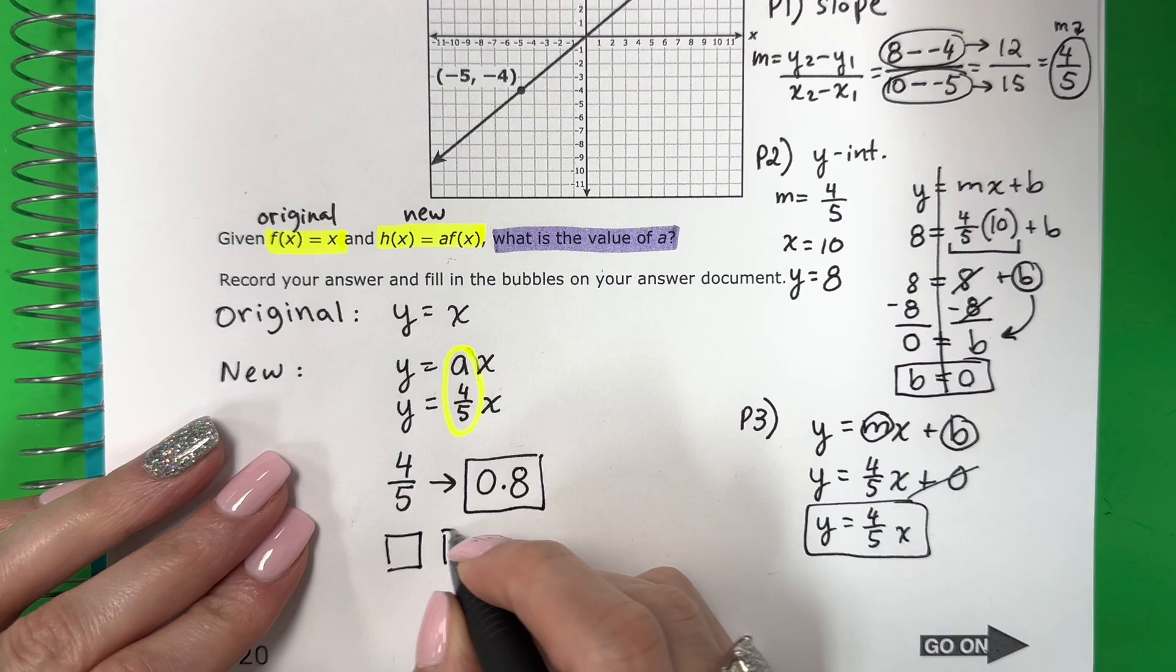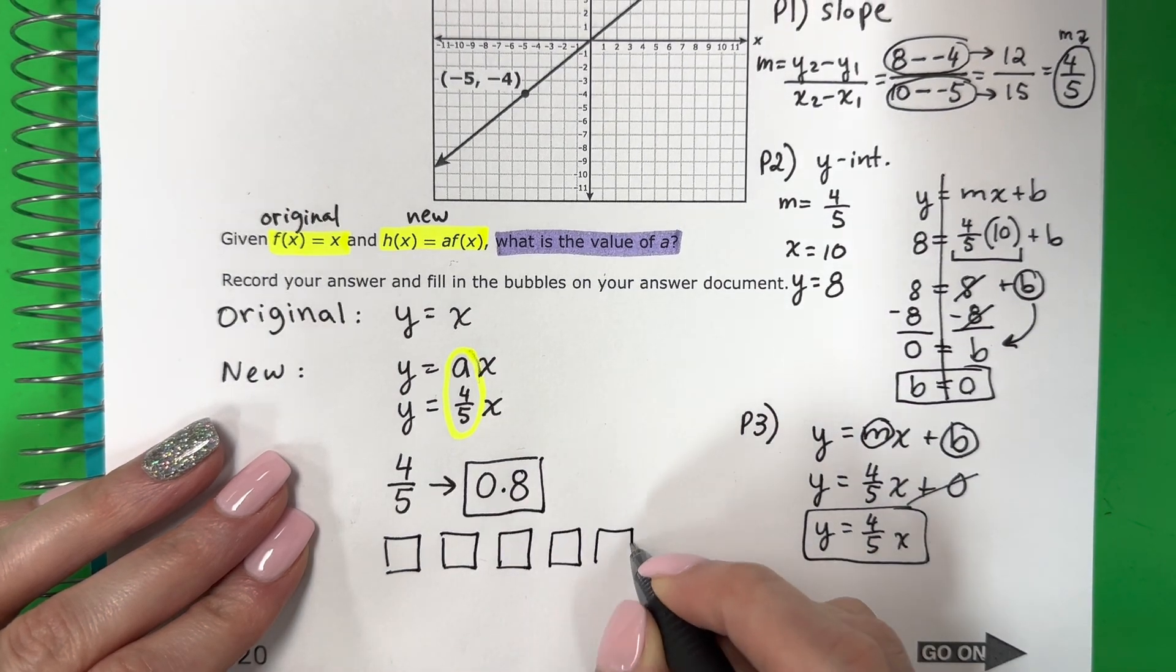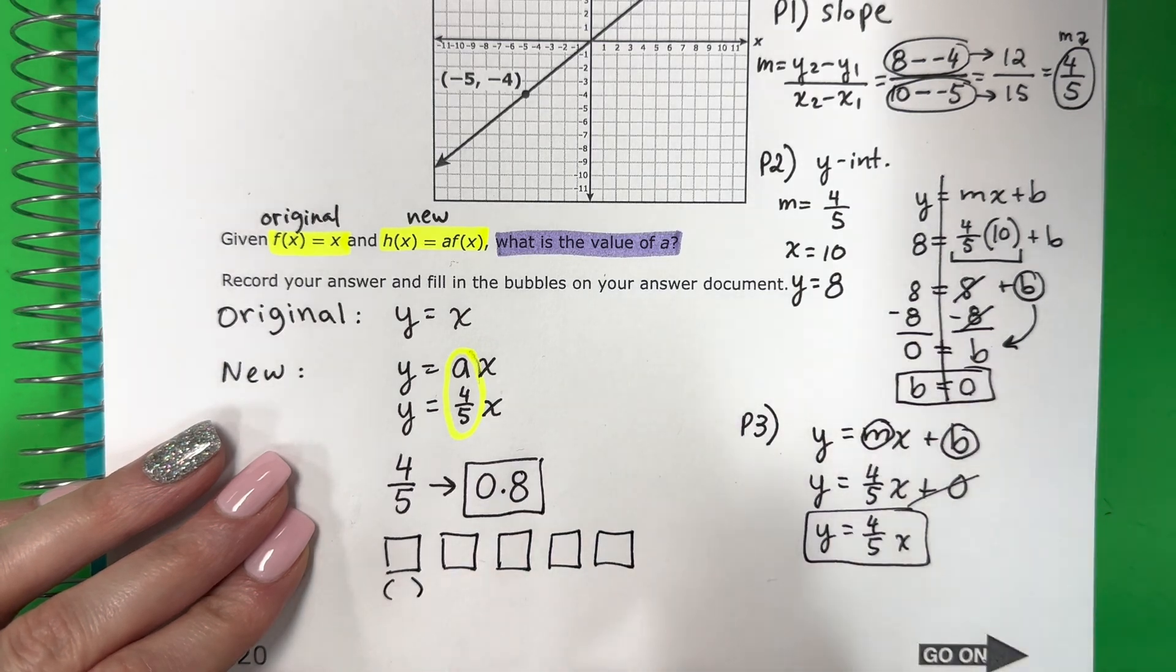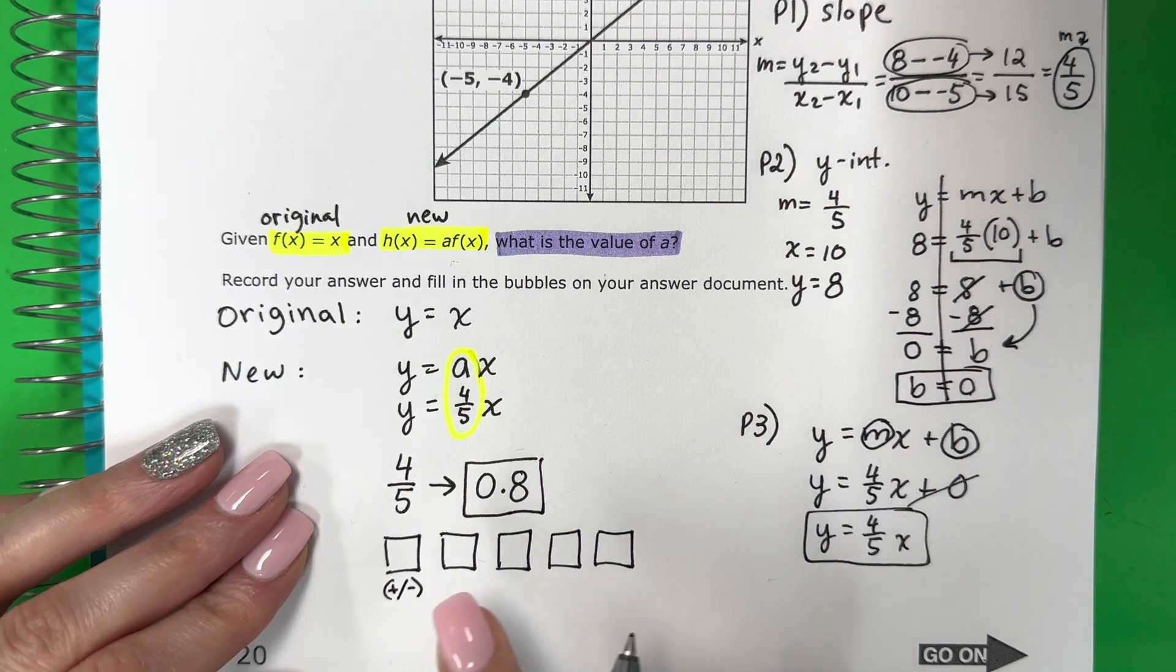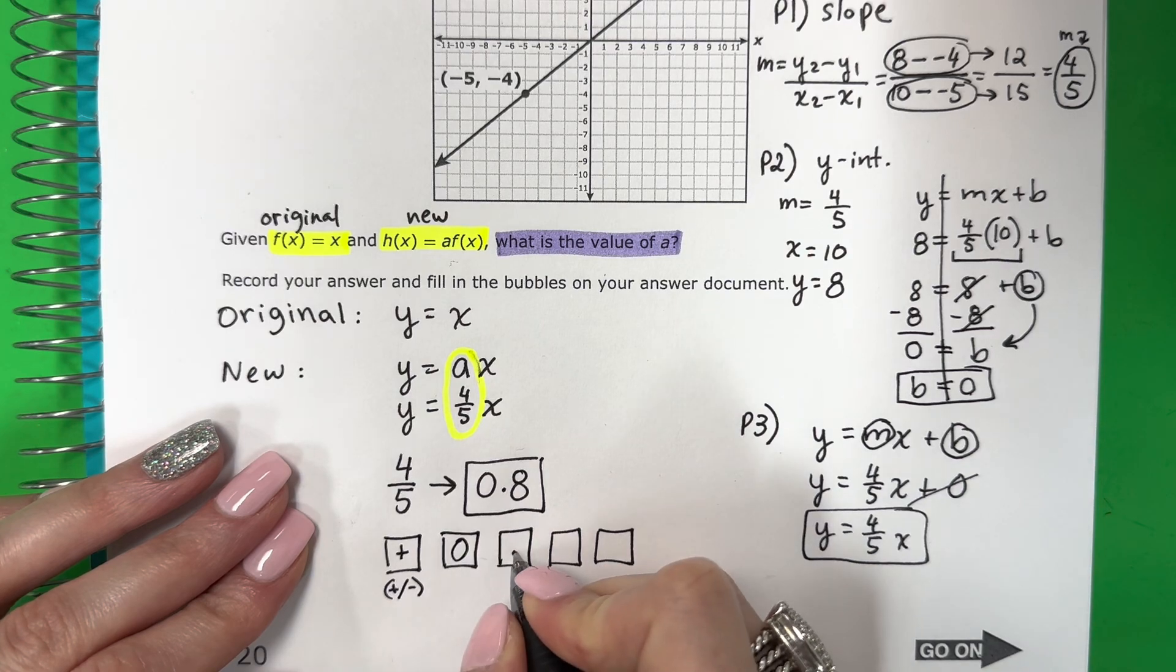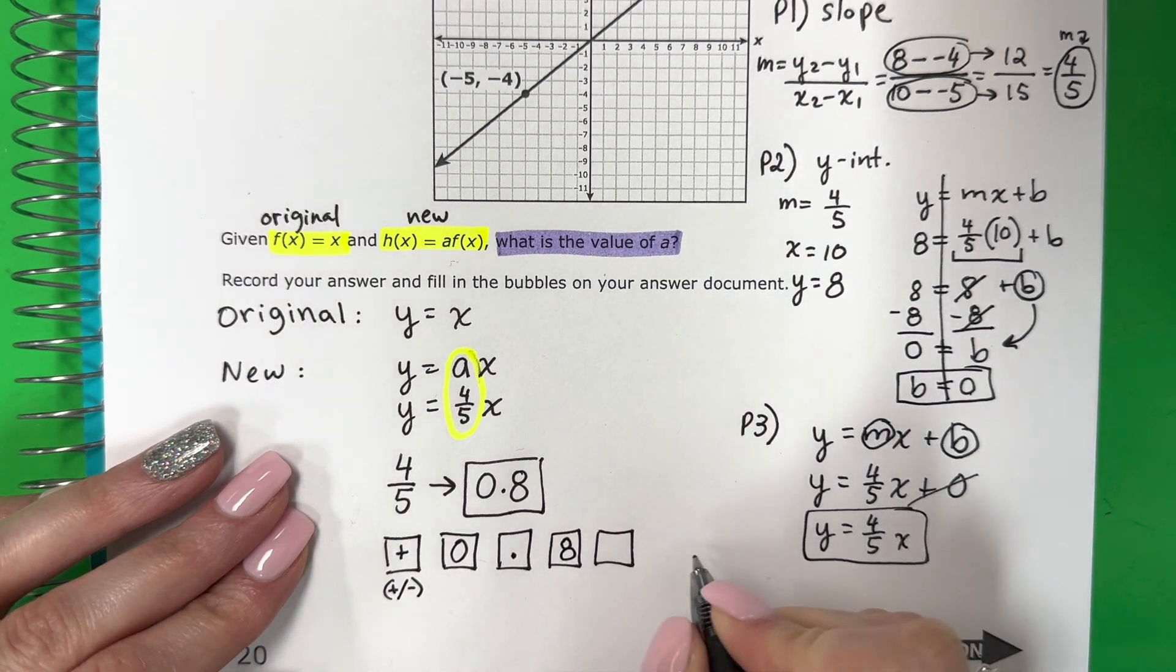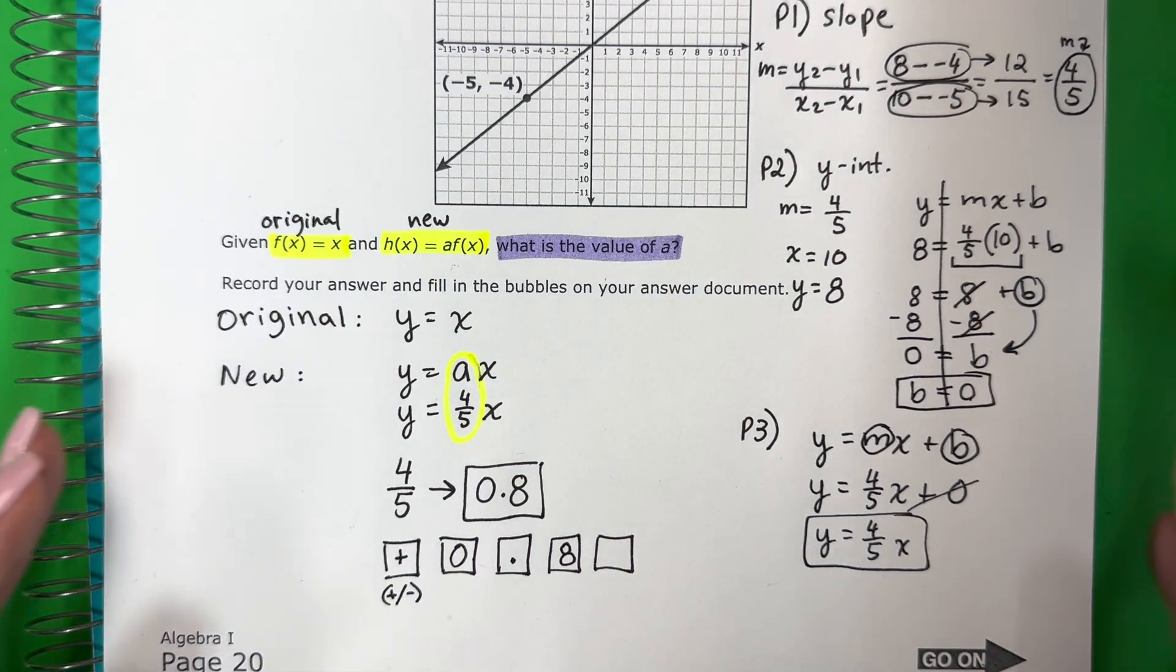So, on the test, en el examen, you're going to have boxes. Hay cajas. I don't know how many. No sé cuántos. The first box, la primera caja, is positive or negative. Es positivo o negativo. And then you put the numbers. Y luego pon los números. So, this is positive, positivo, zero point eight. And leave the rest empty. Y los restos son vacíos. Okay. So, this is your answer. Esta es la respuesta.